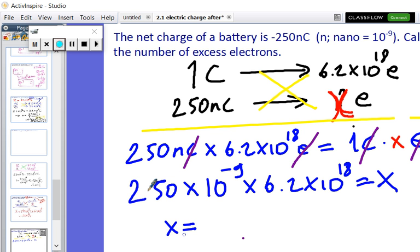X then will be, again asking my lovely calculator, 250 times 6.2 giving me 1550.